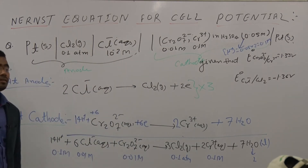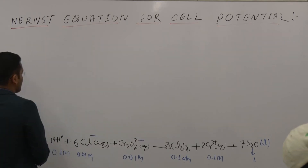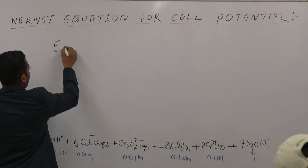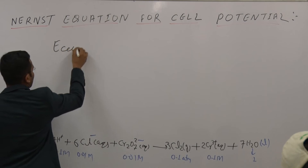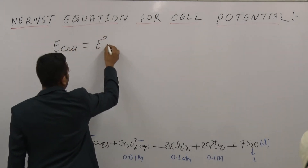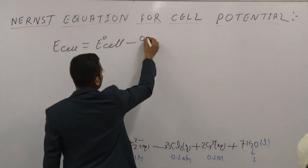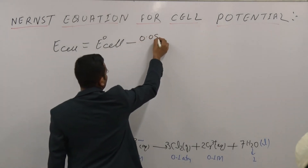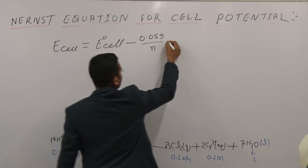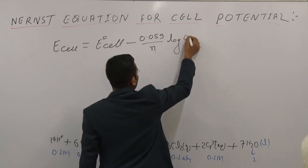Now apply the Nernst equation. We know that E_cell = E°_cell − (0.059 / n) × log Q.